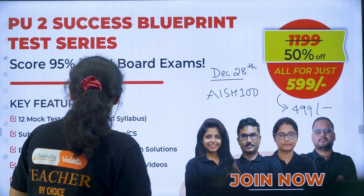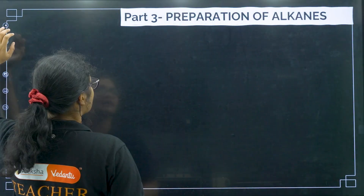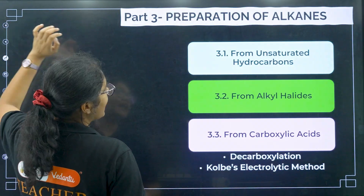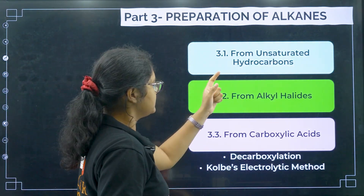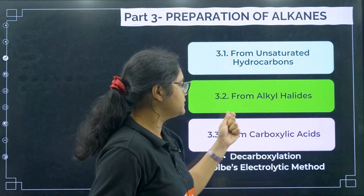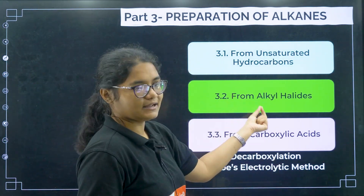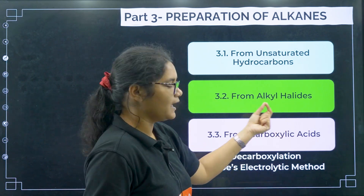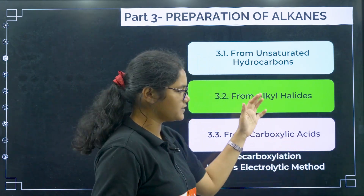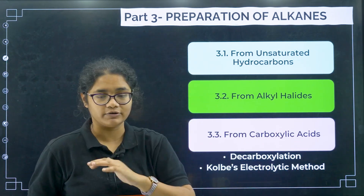Now let us move towards our class — that is, preparation of alkanes. We have 3 methods: first is from unsaturated hydrocarbons, second is from alkyl halides, and the third is from carboxylic acid. We will also be seeing some name reactions today.